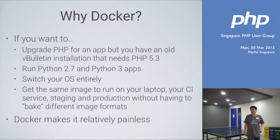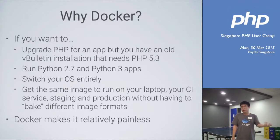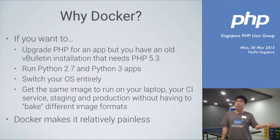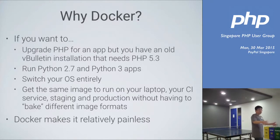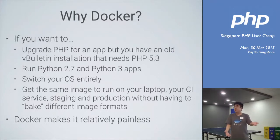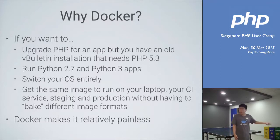Some use cases: if you want to upgrade PHP for an application — say you want to use PHP 7 but you have an old installation running PHP 5.3 — you can keep it in a container, and your new app can run in PHP 7 without problems. Or you want to run Python 2.7 and Python 3 together, or switch the OS entirely — for example, from Ubuntu to Debian. Docker runs on images, and you can run that same image on your laptop, your CI service, your staging server, and your production server without needing different image formats. If your production service is on AWS, you normally need to turn it into an AMI, but with Docker you can keep everything as the same image.